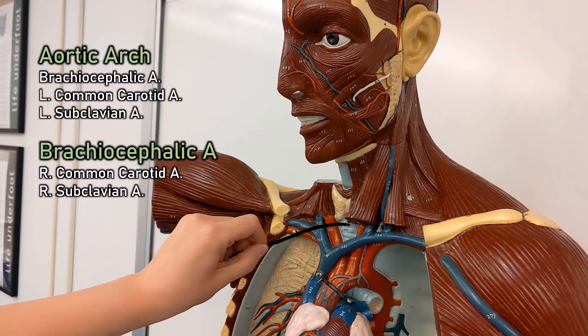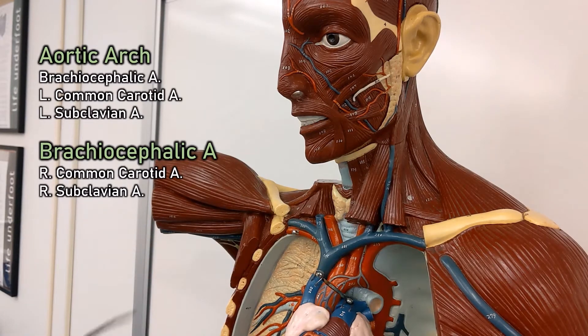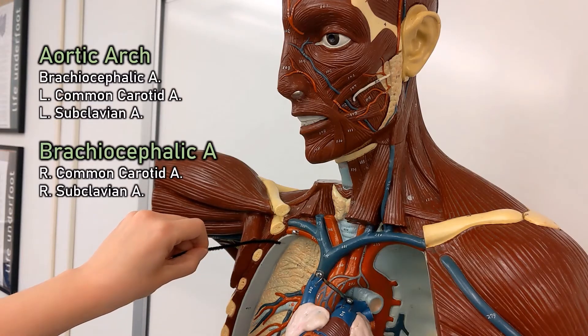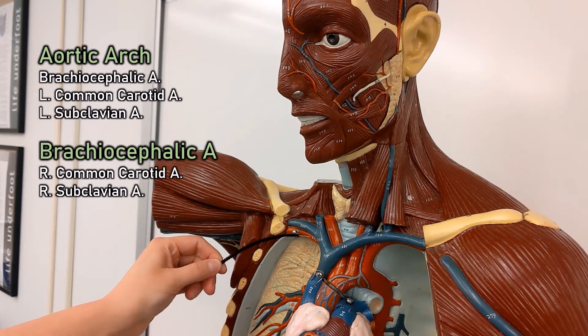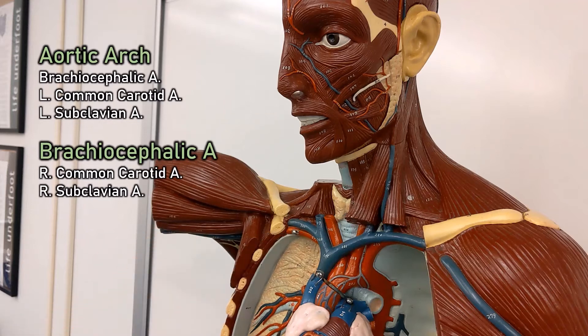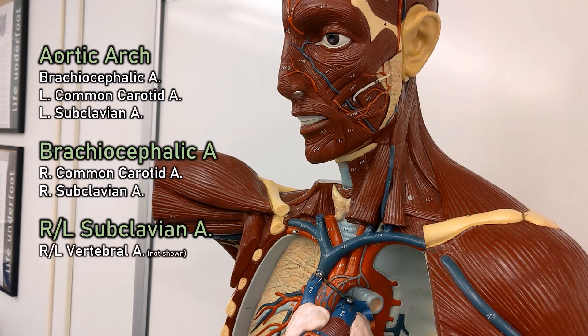The carotids are going off to the head, the subclavian is going off to the arm, but there is a branch of the subclavian, the vertebral artery, that we cannot see here. The vertebral artery is going up into the back of the head, into the brain.